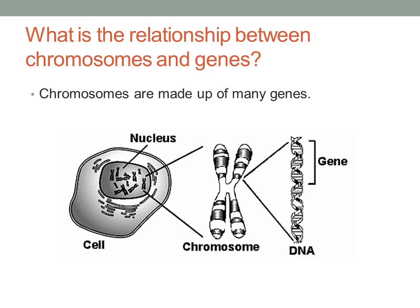What is the relationship between chromosomes and genes? So if you look at the nucleus, you'll see chromosomes inside of it. These chromosomes are tightly wound DNA. If we were to unwind the chromosomes, we would see that we would have DNA, and each section of that DNA would be genes. So chromosomes are made up of many genes.